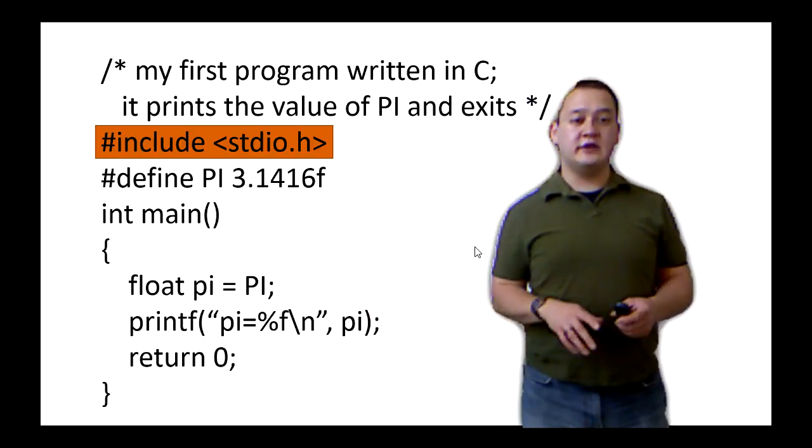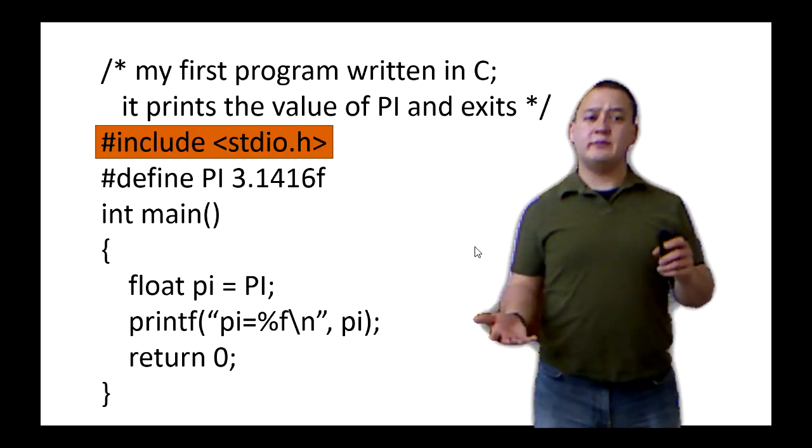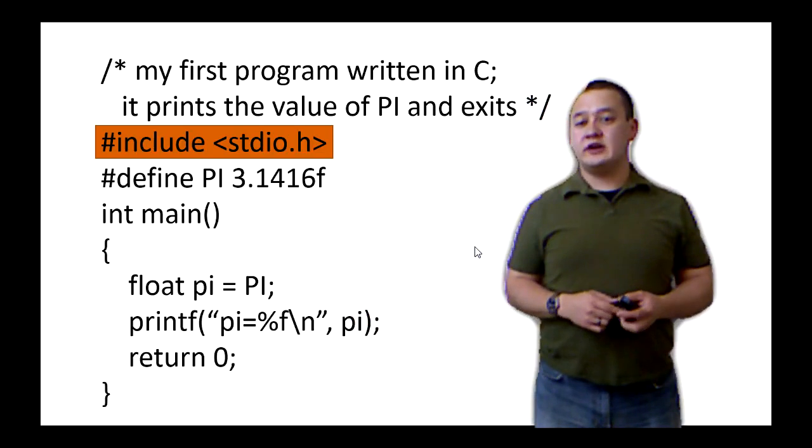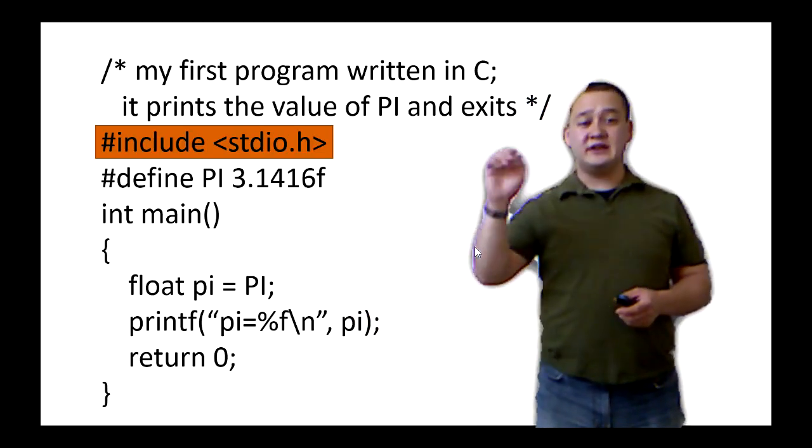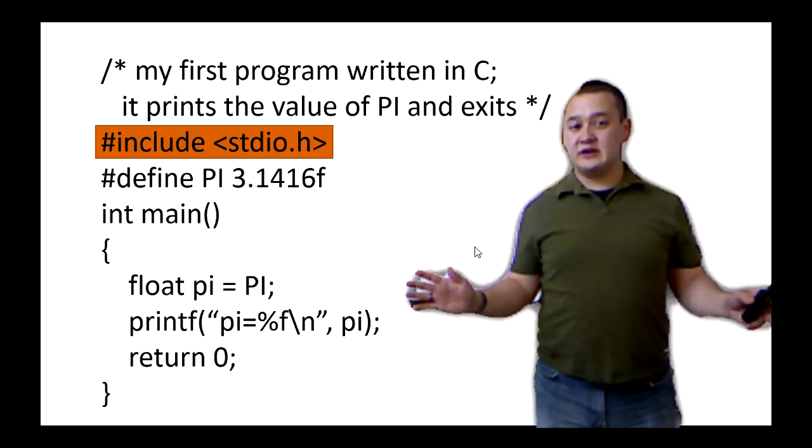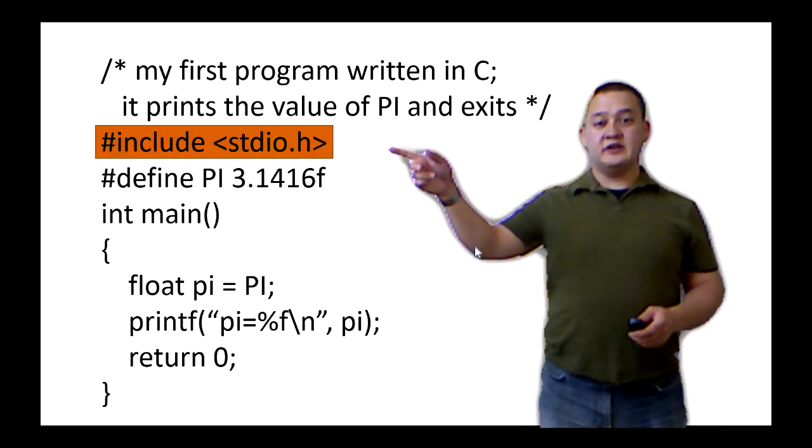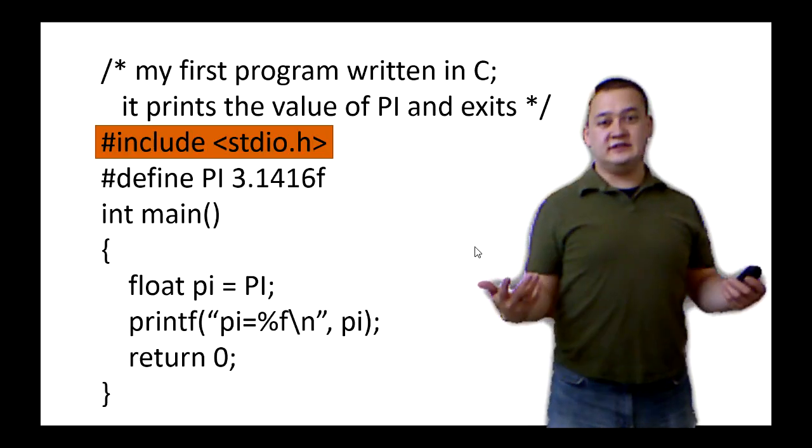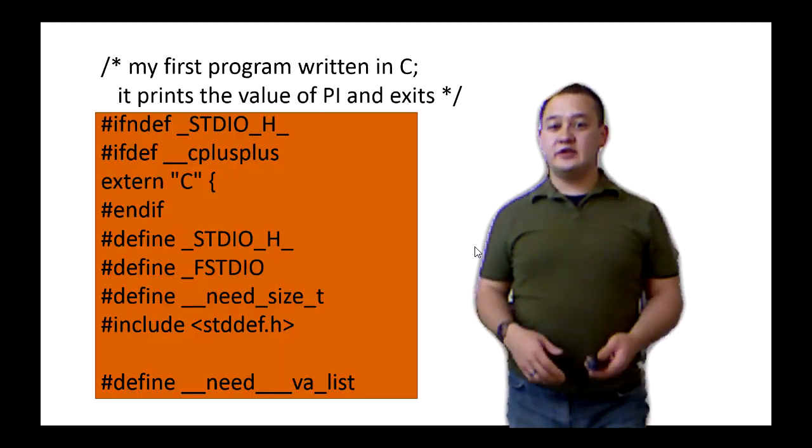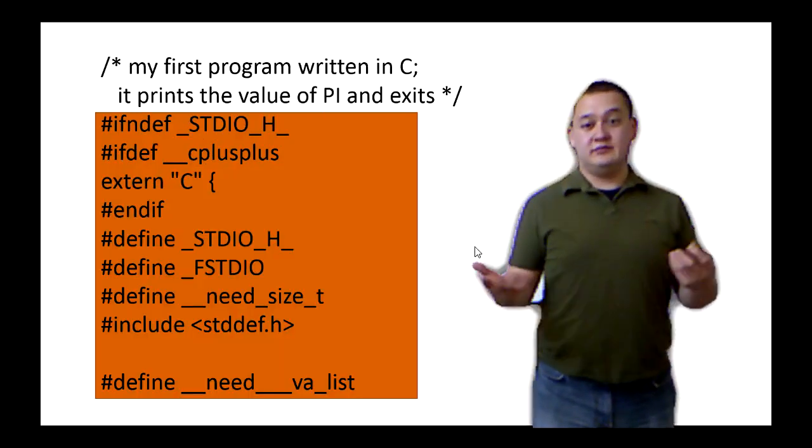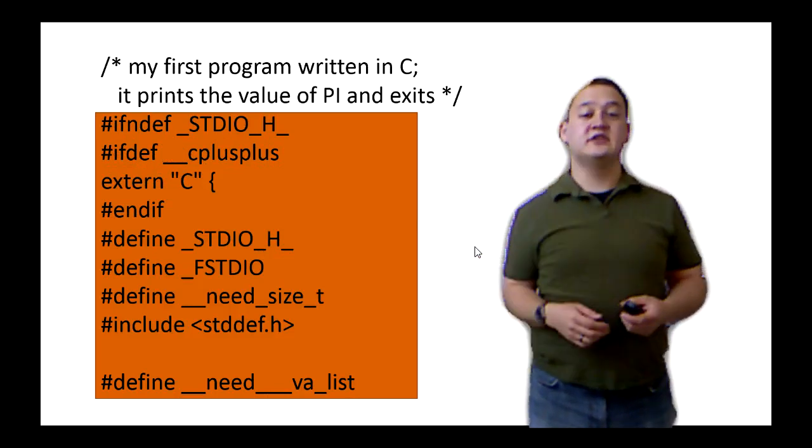The stdio library allows us to do very basic input-output operations into our programs. And so that's been written, been tested, rigorously created by someone else so you don't have to do it. So what the preprocessor will do, it'll look for some file named stdio.h, and it's going to replace the code with the stdio.h library.